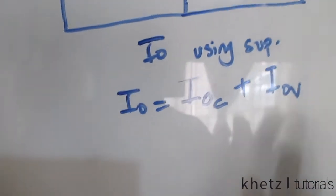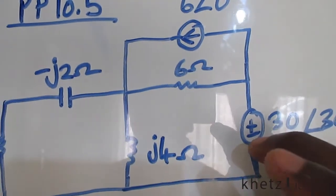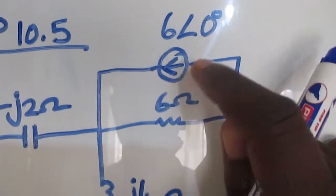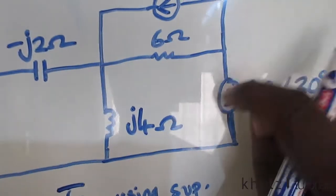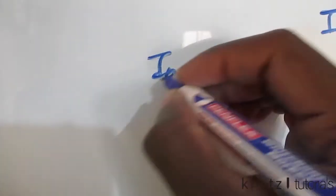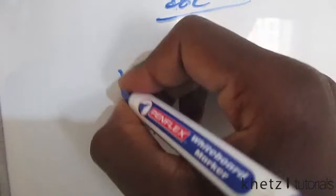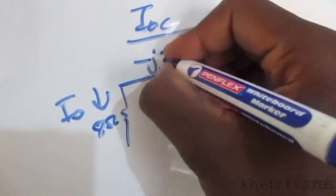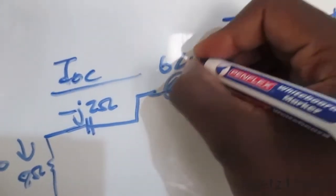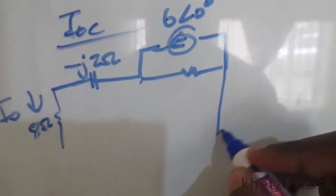Let's start with the contribution of the current source. We have to switch off all other independent sources and only focus on one at a time. To find the contribution of the current source, we switch off the voltage source. The only independent source in play is the current source, and switching off the voltage source leads to a short circuit there.